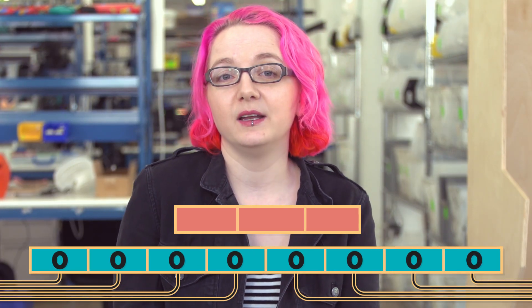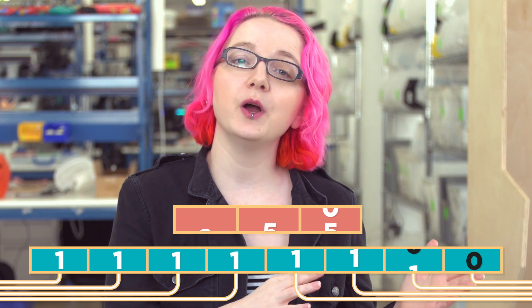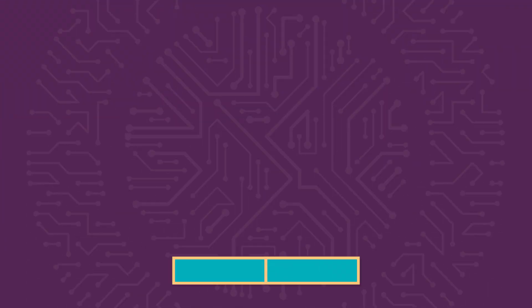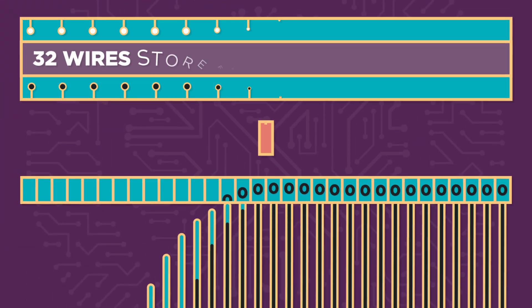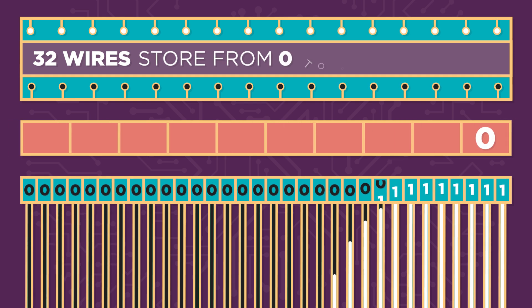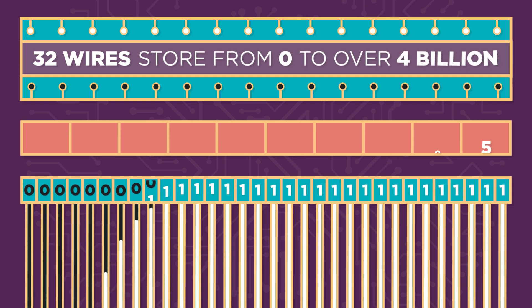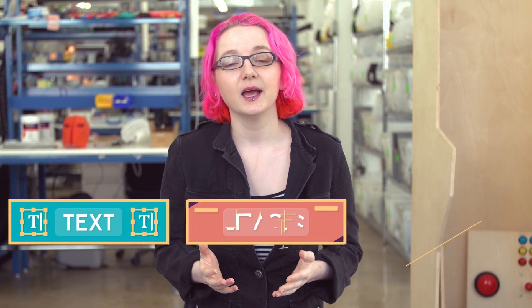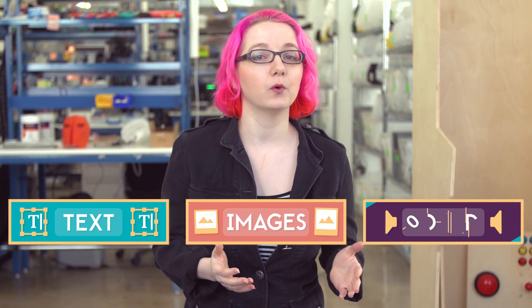With eight wires, you can store numbers between zero and two hundred and fifty-five — that's eight ones. With just thirty-two wires, you can store all the way from zero to over four billion. Using the binary number system, you can represent any number you like. But what about other types of information, like text, images, or sound?